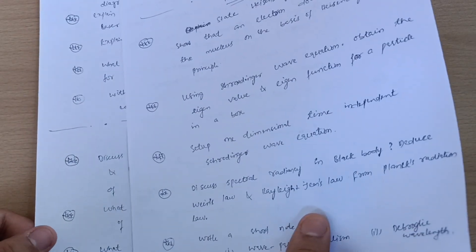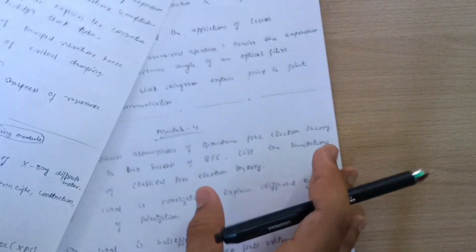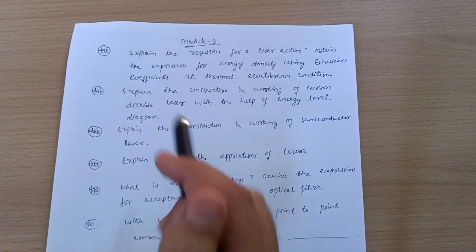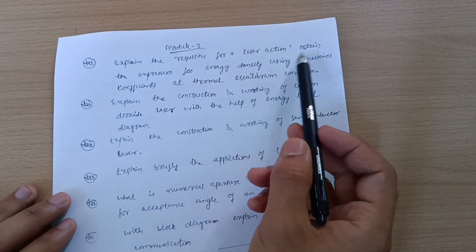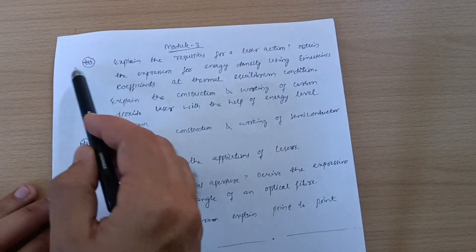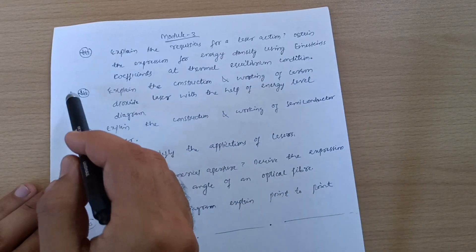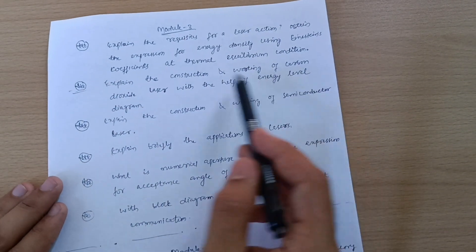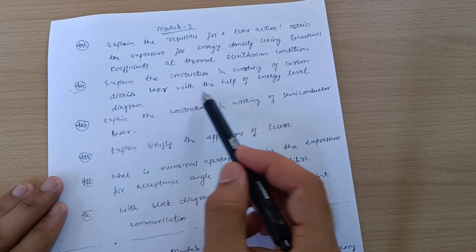Module 3: Explain the requisites for a laser action. Obtain the expression for energy density using Einstein's coefficients at thermal equilibrium condition. This is a super important question. Explain the construction and working of carbon dioxide laser with the help of energy level diagram.